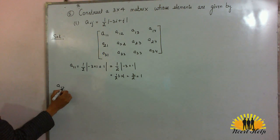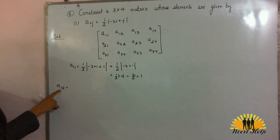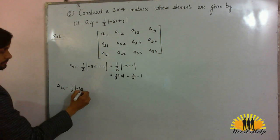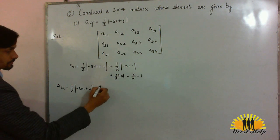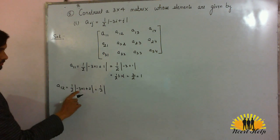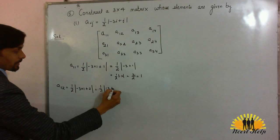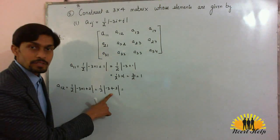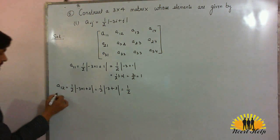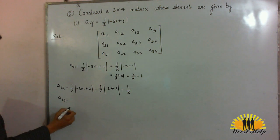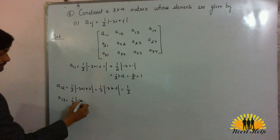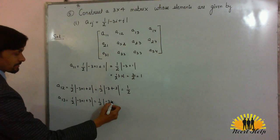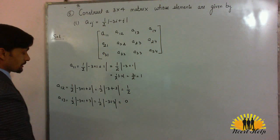Now A12: i is 1, j is 2. Put in this formula: minus 3 into 1 minus 3 plus 2 equals minus 1, and absolute value of minus 1 is 1, so 1/2. For A13: i is 1, j is 3: minus 3 plus 3 equals 0, and 0 divided by 2 is 0.